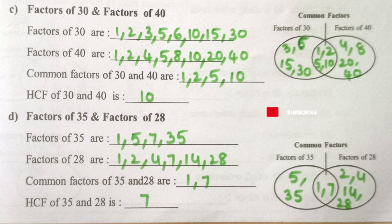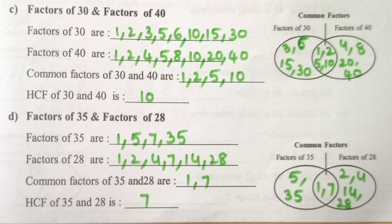Factors of 35 are 1, 5, 7, 35. Factors of 28 are 1, 2, 4, 7, 14, 28. Common factors of 35 and 28 are 1, 7. HCF of 35 and 28 is 7.